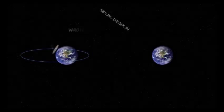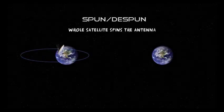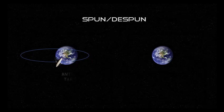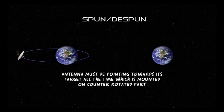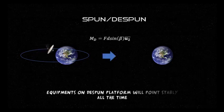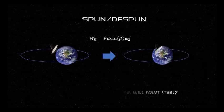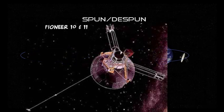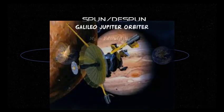Spun-despun: in a spin stabilization satellite, the whole satellite spins and the antenna and other parts will only point towards their target once every rotation of the satellite. If the antenna must be pointing towards its target all the time, it could be mounted on a platform which is de-spun. Equipment on a de-spun platform will point stably in the same direction all the time. For example, NASA's Pioneer 10 and 11 spacecraft, Galileo's spacecraft, etc.